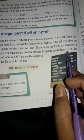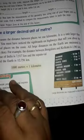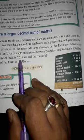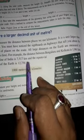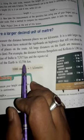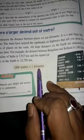For example, the distance between Bengaluru and Kolkata is 1,961 kilometers. The coastline of India is 7,517 kilometers, and the equatorial diameter of the Earth is 12,756 kilometers. 1,000 meters equals 1 kilometer.